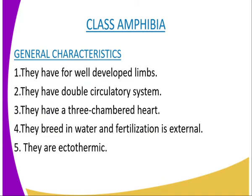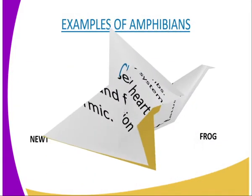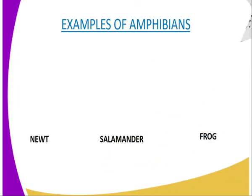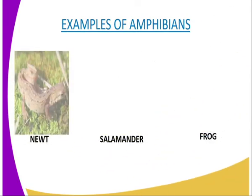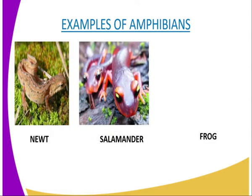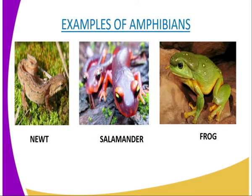These amphibians actually include the newts, the salamanders, the frogs and the toads. We can have a diagrammatic representation of the same, whereby in the first diagram we have the newts, we have the salamander, and also we have the frog.